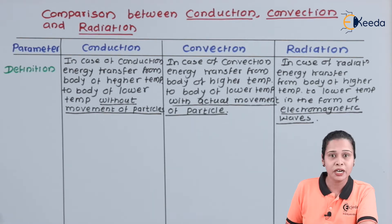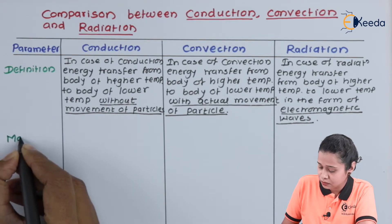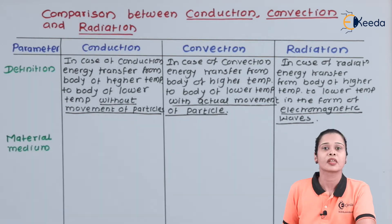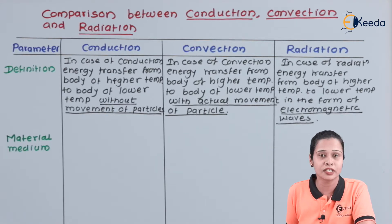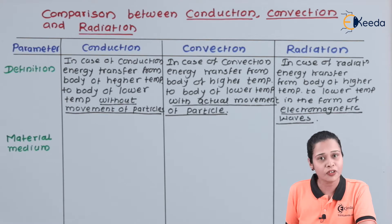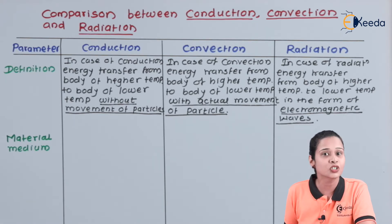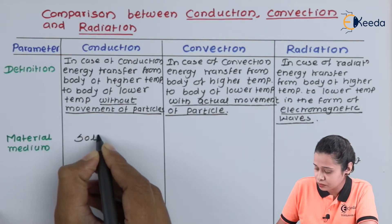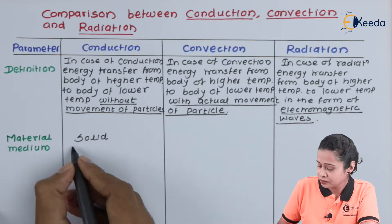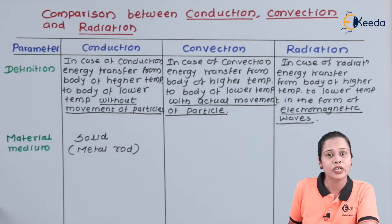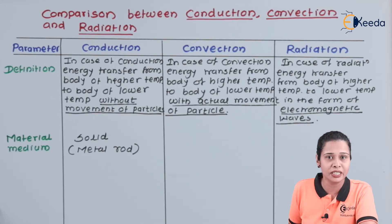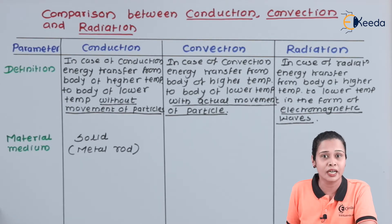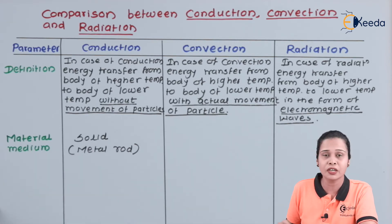The second parameter is material medium required for these processes. In case of conduction, the energy transfer happens in solids only, so the material required is a solid. We can take a metal rod as an example. Suppose we are heating one end of the metal rod — that end is at higher temperature and the energy will transfer to the other end, which is at lower temperature. So in conduction, we require a solid medium.